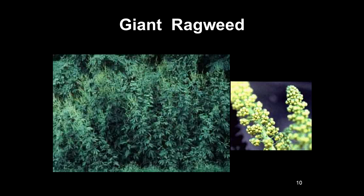On the other side is a close-up of the flowers of giant ragweed. And like the other plants we've been talking about, these can produce huge numbers of pollen. One ragweed plant is estimated to produce one billion pollen grains. These are easily distributed through the air and cause misery to many people.